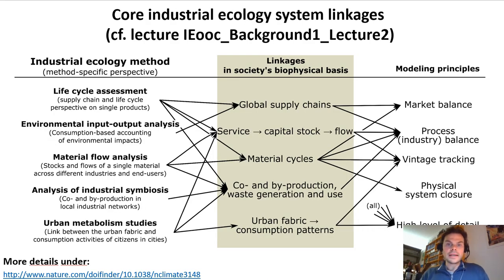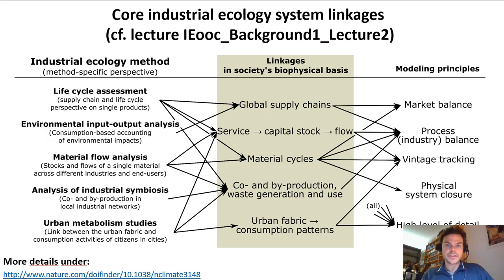Industrial ecology captures five system linkages in the global socio-ecological system. These linkages include the global supply chains, the link between service provision, stock accumulation and material energy flows, the material cycles, co- and by-production and waste generation and use, and the link between urban fabric and consumption patterns.